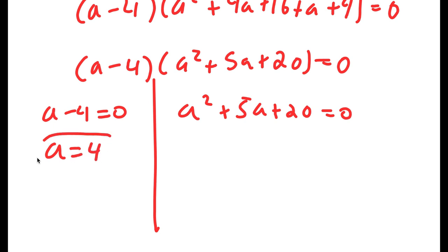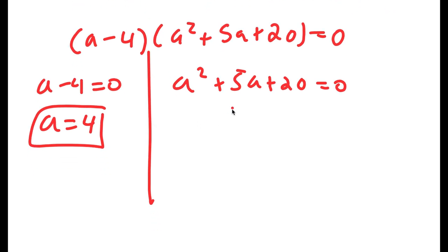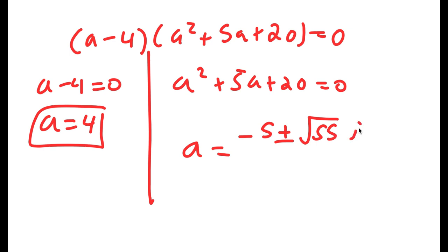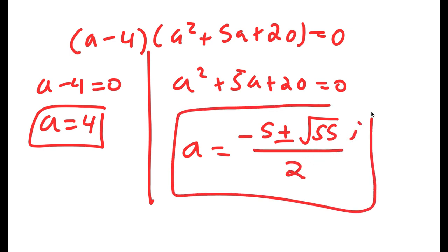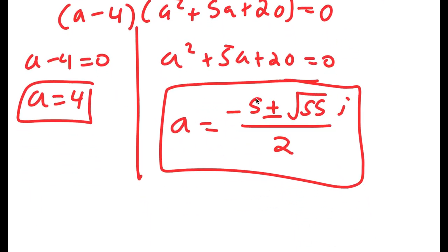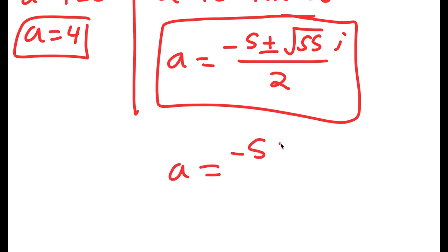For a minus 4 equals 0, a is obviously equal to 4. For a squared plus 5a plus 20 equals 0, I'll use the quadratic formula. What you should get is a equals negative 5 plus or minus the square root of negative 55 over 2.